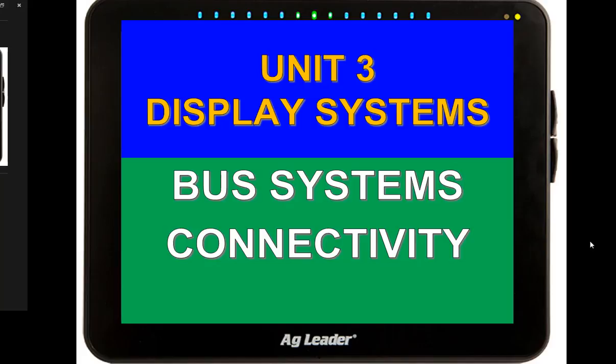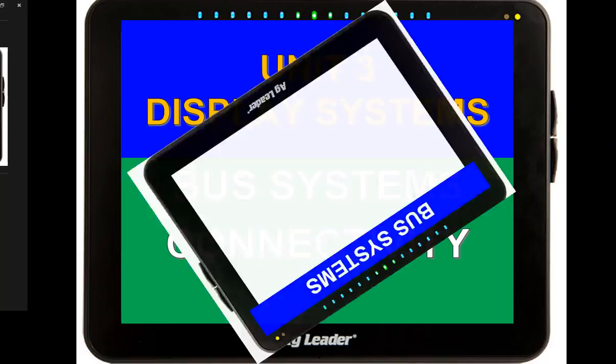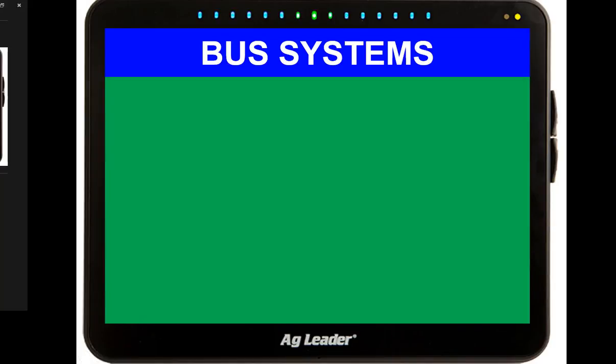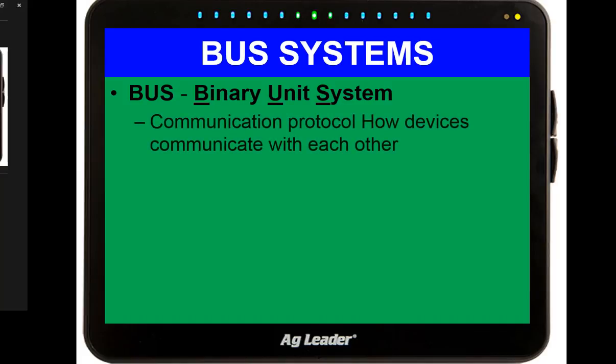We're going to start with the bus systems, and this is where displays have really started coming into their own. Bus systems — BUS is an acronym that stands for Binary Unit System. Basically, what the binary unit system is, is a communications protocol. It tells us how devices can communicate with each other. So when I plug a display into something, it's going to be able to communicate with whatever I plug it into. The best way to put it in layman's terms: it's like plug and play.